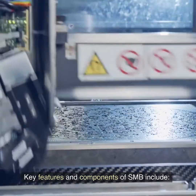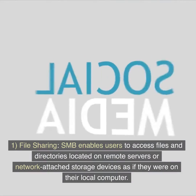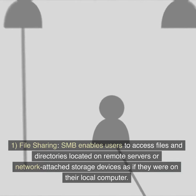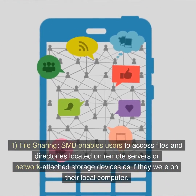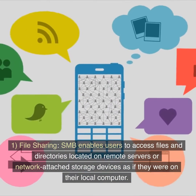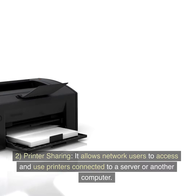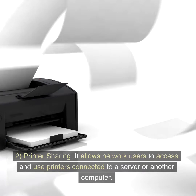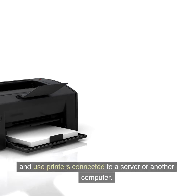Key features and components of SMB include: 1. File Sharing — SMB enables users to access files and directories located on remote servers or network-attached storage devices as if they were on their local computer. 2. Printer Sharing — It allows network users to access and use printers connected to a server or another computer.